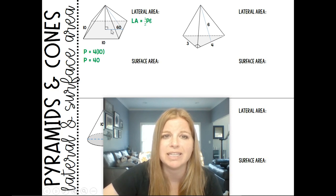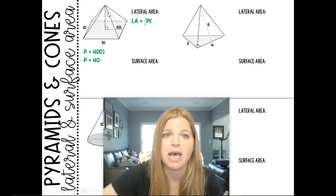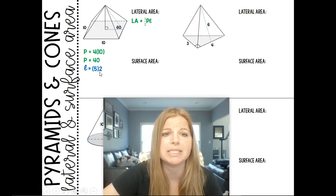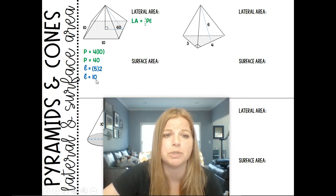and that 5 would be opposite the 30. And we know the relationship between the side opposite the 30 and the hypotenuse is that it's doubled. So my slant height would be 5 times 2, which is 10.